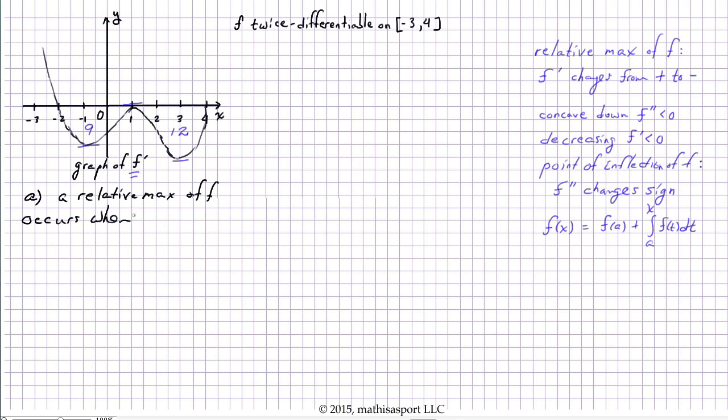A relative max of f occurs when f prime changes sign from plus to minus as x increases. f prime is represented as the height on this graph, and so we simply need to note where the graph's height changes from being above the x-axis to below the x-axis, and that occurs right here at negative 2.